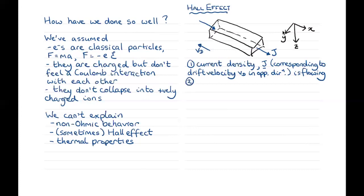The second step in our thought experiment is to apply a perpendicular magnetic field along the z direction. This magnetic field causes a Lorentz force equal to minus e times v cross B on the electrons.